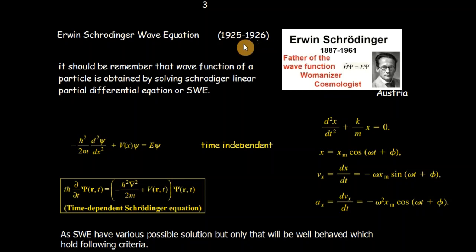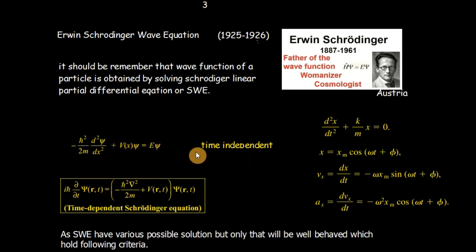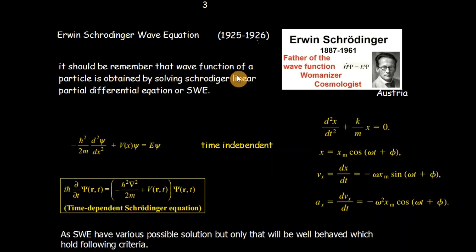Remember that in 1926, Schrödinger developed a differential equation. We have both the time-independent Schrödinger equation and the time-dependent Schrödinger equation. The wave function of a particle is obtained by solving Schrödinger's linear partial differential equation.